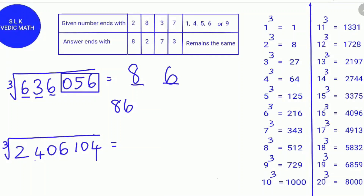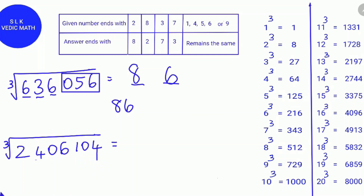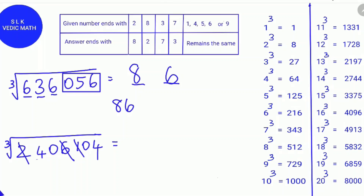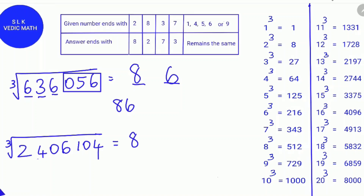Let's try another example: the cube root of 2,406,104. For Rule 1, find the digital root of 2,406,104. Cross out numbers that add up to 9: 6 plus 2 plus 1 adds up to 9. Then add the remaining digits: 4 plus 4 is 8. So the digital root of 2,406,104 is 8. Since a number's digital root is 1, 8, or 9, it is a perfect cube.